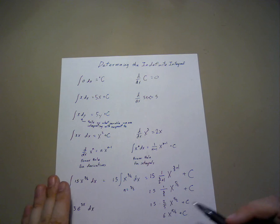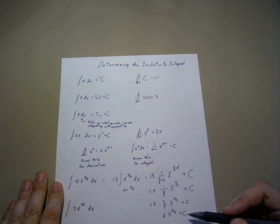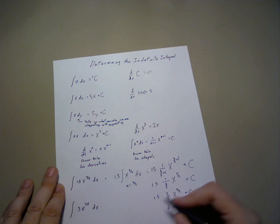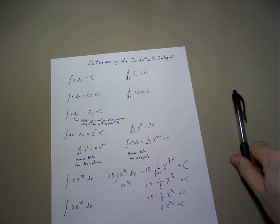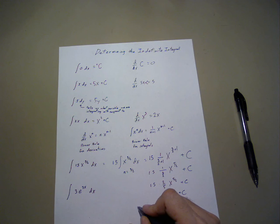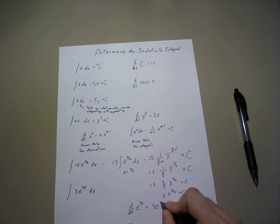Likewise, as our final example, 3 times e to the 3x. If we recall, the derivative of e to the 3x is 3e to the 3x.